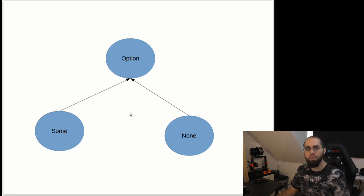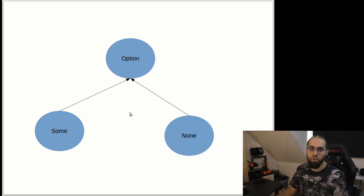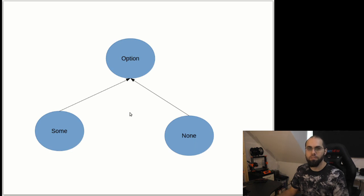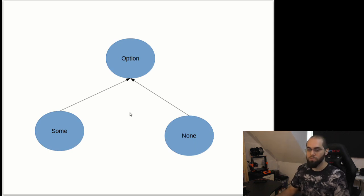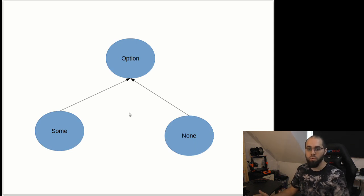The only goal of an optional type is to model when a given field in your application is, like the namesake, optional. So if you have something you have a Some; if you don't have anything you have a None. Since you know that a given field is optional, you have to deal with the fact that the field might not be there at all, and you have to do something about it.